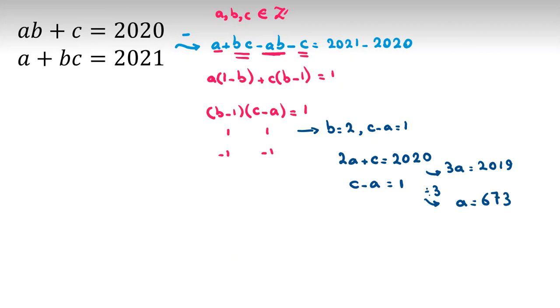Because c - a = 1, c will be... b is 2, c - a = 1, so c will be a + 1 = 674. This is our first answer.